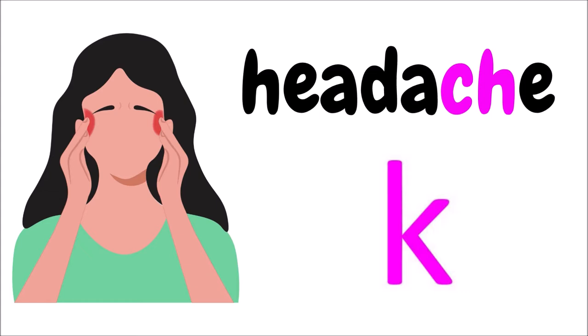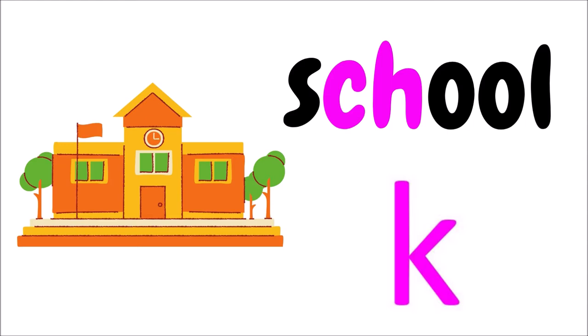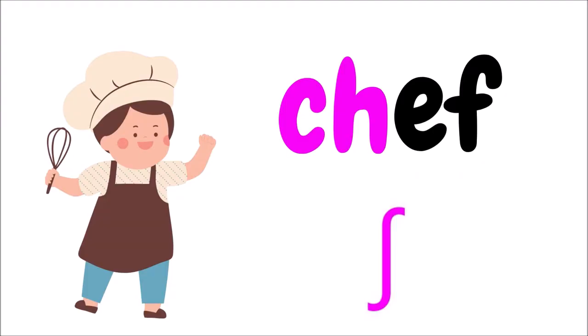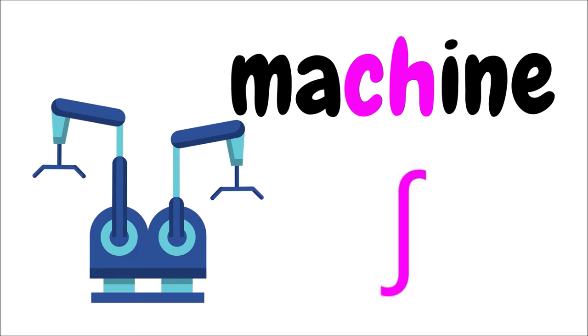Sometimes you might see certain letters written but the sound is different. Like in these words: headache, school. And then sometimes the letters 'ch' are written but the sound is 'sh', like in chef and machine.